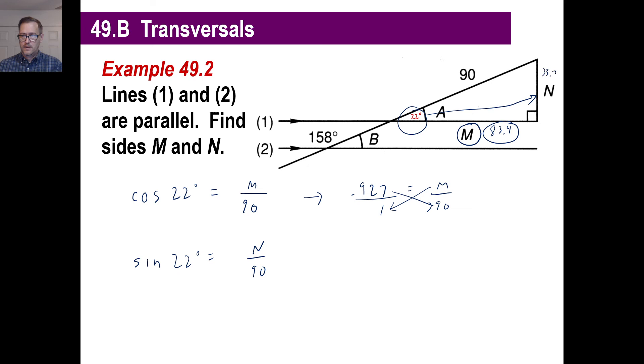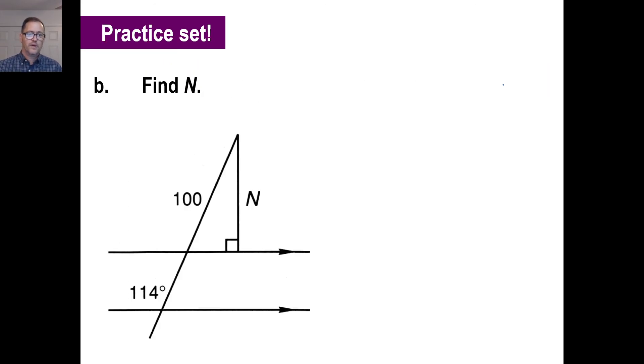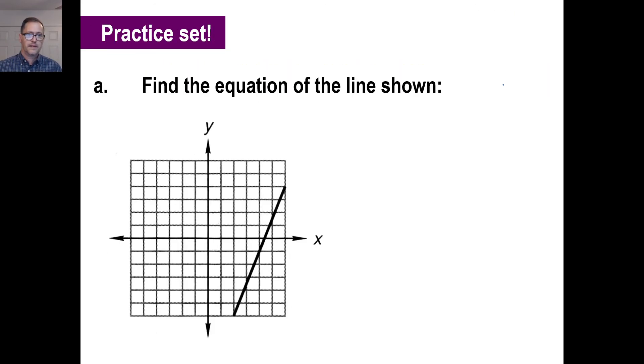0.375-ish. All right. And again, times it by 90. 33.7. That's what I got. And there you go. And that's how you find the angles of using those transversals.